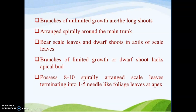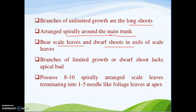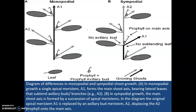There are two types of branches in Pinus. Branches of unlimited growth are long shoots — their growth is unlimited. These long shoots are arranged spirally around the main trunk. Dwarf shoots bear the scale leaves; dwarf shoots arise from the long shoots.